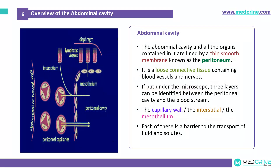The abdominal cavity and organs contained in it are lined by a thin smooth membrane known as the peritoneum. This peritoneum is a loose connective tissue that contains blood vessels and nerves. If we put it under a microscope, we will notice three layers between the peritoneal cavity and the bloodstream: the capillary walls, the interstitial layer, and the mesothelium. Each of these layers acts as a barrier to the transport of fluids and solutes in peritoneal dialysis.